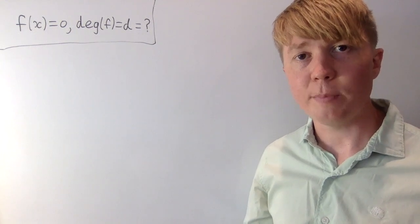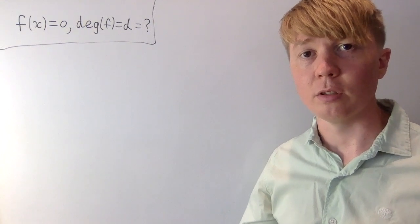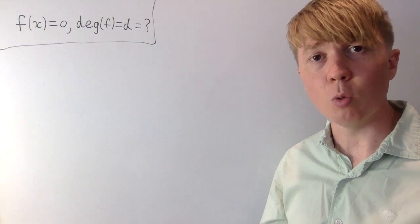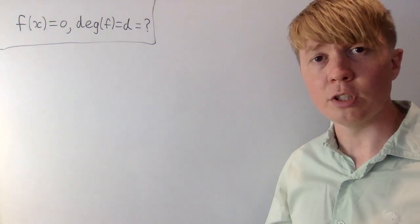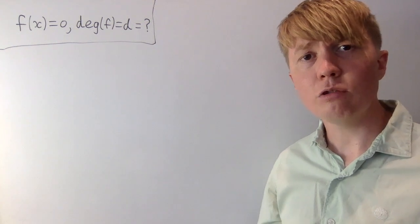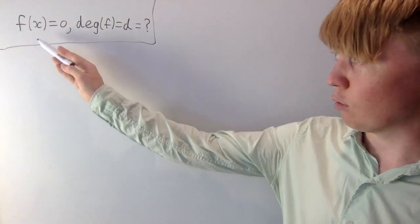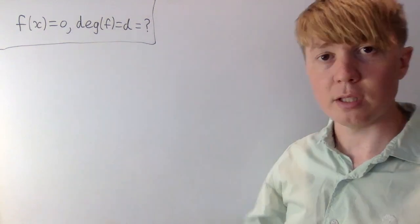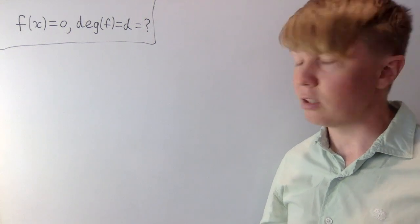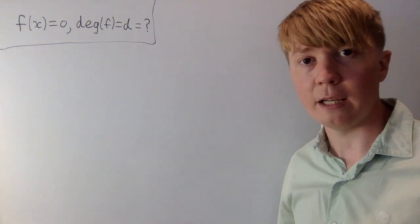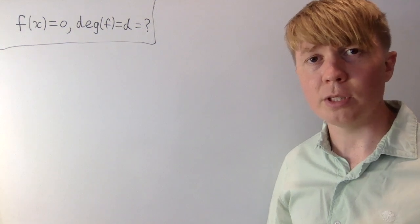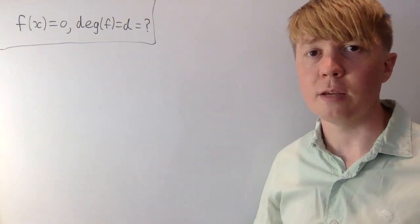The degree of a polynomial is essentially the highest power of x that appears in your polynomial. For a cubic the degree will be 3, for a quadratic the degree is 2, for a linear polynomial the degree would be 1, and for a constant polynomial the degree would be 0. You can think of this as x to the power of 0 corresponding to a constant. So it's really interesting to explore what is the degree of the zero polynomial — the polynomial where for every x you put in you just get 0 as your output. We'll explore this by looking at different properties of degrees of polynomials and try to find something that fits in with all of these properties.